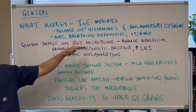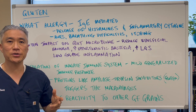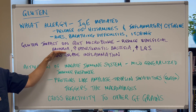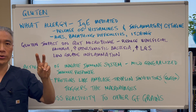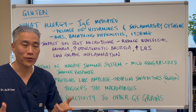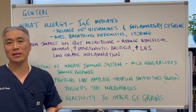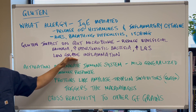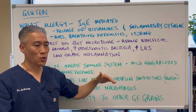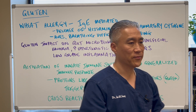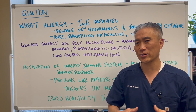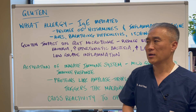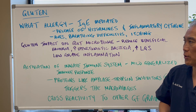Gluten also impacts the gut microbiome. It reduces beneficial bacteria in our gut, thereby allowing bad bacteria to overgrow, which leads to leaky gut syndrome as well as low-grade inflammation. So when you start to have low-grade inflammation you're going to have symptoms like joint pain, skin issues, brain fog, and just not feeling well overall.